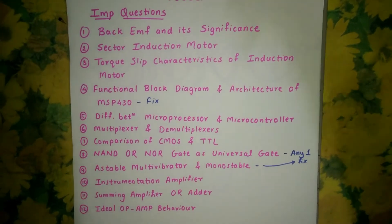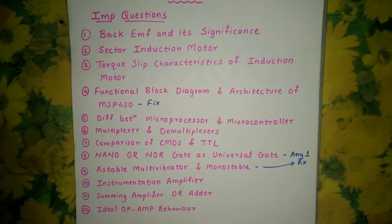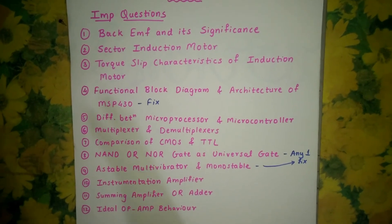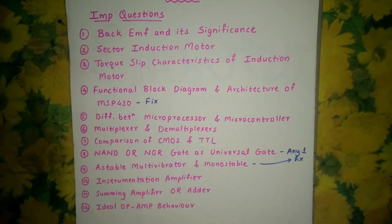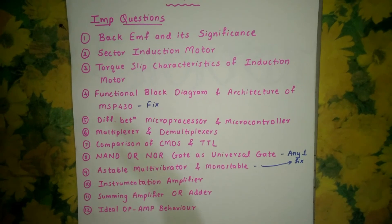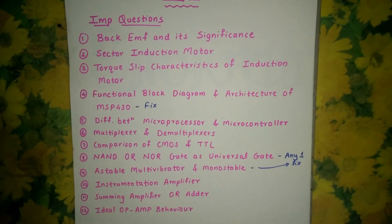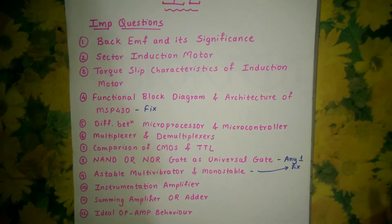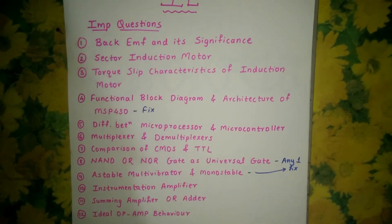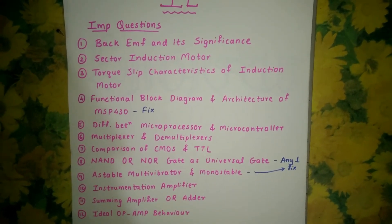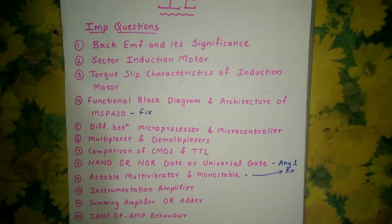All the questions from 7th to 12th are important — do all of them properly. This will easily help you get 35 to 30 marks in your paper and pass your industrial electronics exam. Thank you for watching and hope you liked the video.